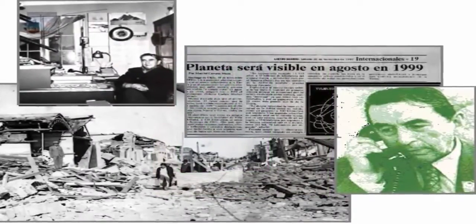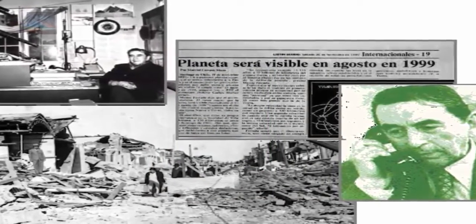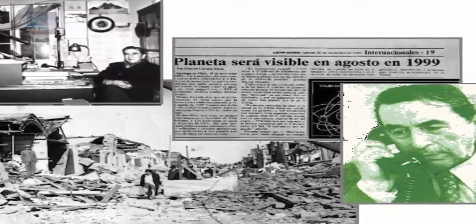At number 4 on our list, Carlos Munoz Ferrada. His name is forever linked to Nibiru. Carlos Munoz Ferrada predicted with extraordinary accuracy numerous earthquakes in South America during the last century. He did this by making direct correlations between specific astronomical phenomena and various catastrophic earthquakes and volcanic eruptions.